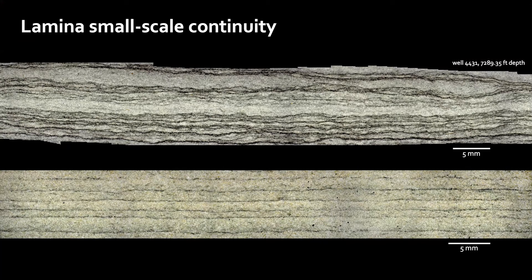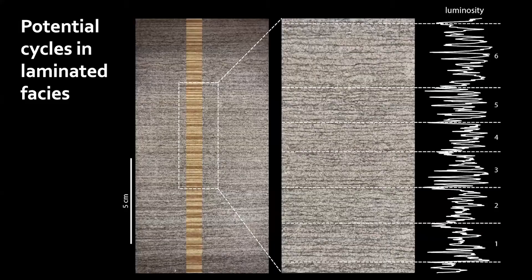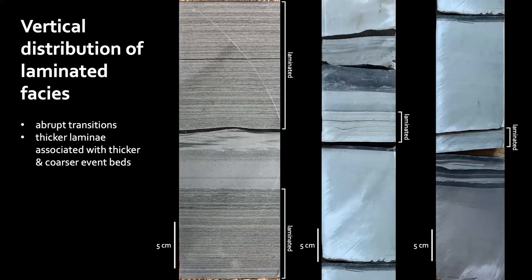Note the scale bar here. These images were created with a portable microscope called Dynolite. Because of this fine-scale variability, we initially thought that these layers are discontinuous at the large scale — it turns out that we were wrong; more about that in a second. Although it is unclear at this point what the cause is, some sections of the laminated facies display cycles. You can see here in this luminosity curve six clusters of thicker sand laminations. The coarser and thicker laminations tend to be associated with classic turbidites, and the percentage of laminated to non-laminated facies can change fairly quickly.